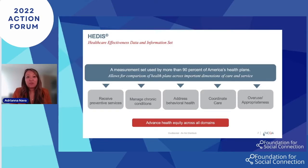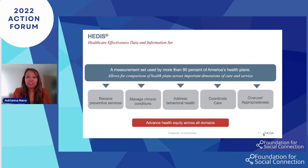We know that to improve health equity, we must first be able to measure it. And this is where we leverage our HEDIS dataset, which is one of the most widely used performance improvement tools. In fact, 191 million people are enrolled in plans that report HEDIS results. HEDIS includes more than 90 measures across six domains of care, which focus on the receipt of preventive services, managing chronic conditions, addressing behavioral health, coordinating care, and assessing the appropriateness of care. Our HEDIS performance data allows for the opportunity to identify room for improvement, monitor the success of quality improvement initiatives, and allows for comparison with other health plans.